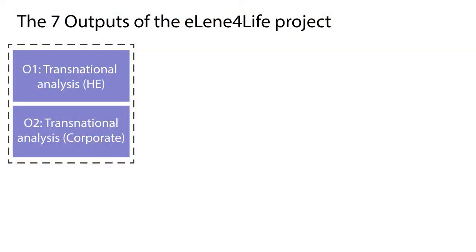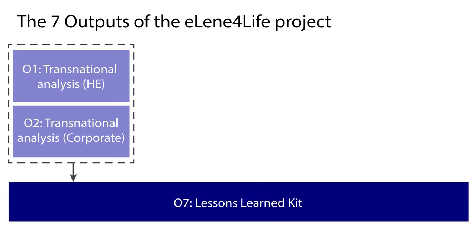To achieve these aims, we've been working on seven interrelated outputs. In the first year of the project, we produced two transnational reports on active learning for soft skills development — one for higher education and the other for the corporate sector. We also produced a synthesis of these reports in the form of the first Lessons Learn Kit, more of which will follow.